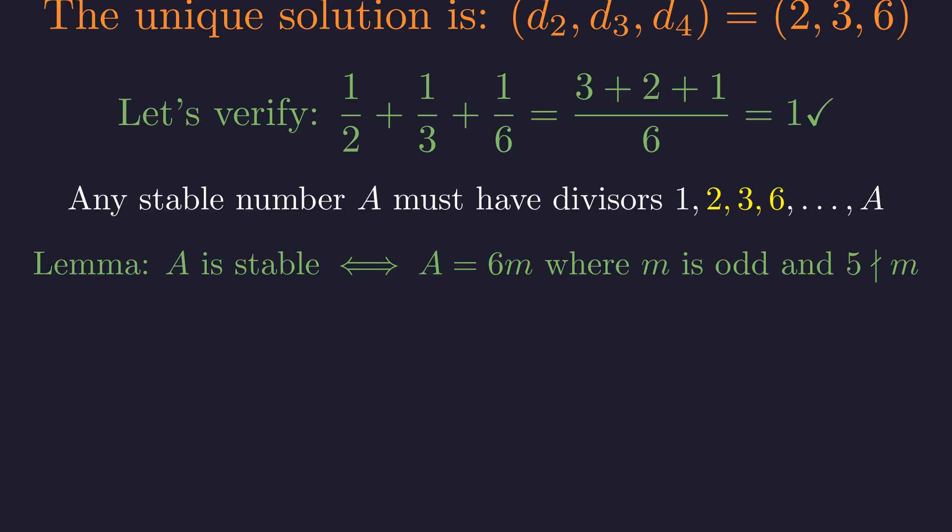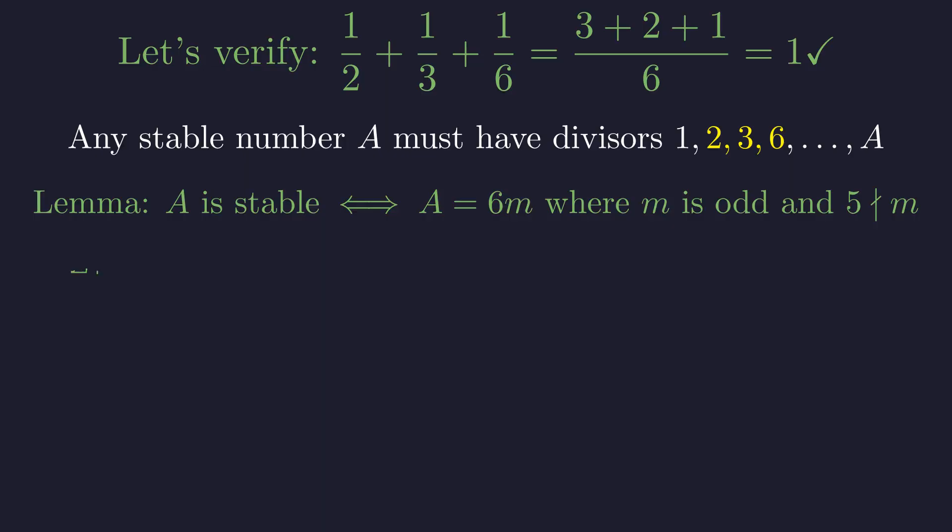To ensure no smaller divisors exist, A cannot be divisible by 4 or 5. This is equivalent to saying A has the form 6 times m, where m is an integer not divisible by 2 or 5. In summary, a number A is stable if it is divisible by 6, but not divisible by 4, and not divisible by 5. This guarantees that its smallest divisors greater than 1 are precisely 2, 3, and 6.